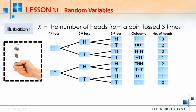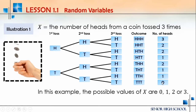Looking at the results: HHH gives three heads; HHT gives two heads; HTH gives two heads; HTT gives one head; THT gives one head; TTH gives one head; and TTT gives zero heads. Therefore, the possible values of X are zero, one, two, or three.